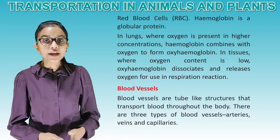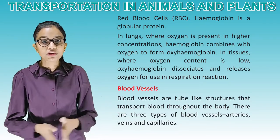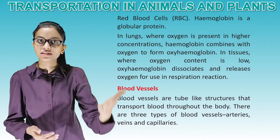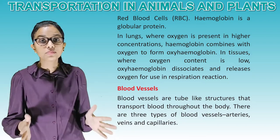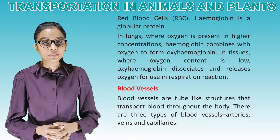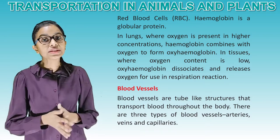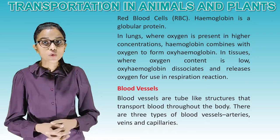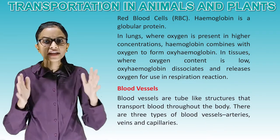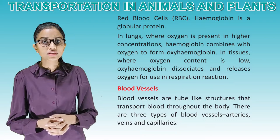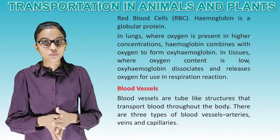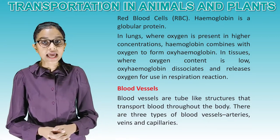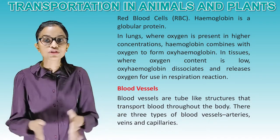Role of blood in oxygen transport: respiration is a process in which oxygen gas in air is inhaled and carbon dioxide is exhaled. Blood transports these gaseous compounds through hemoglobin present in red blood cells. Hemoglobin is a globular protein. In lungs, where oxygen is present in higher concentration, hemoglobin combines with oxygen to form oxyhemoglobin. In tissues, where oxygen content is low, oxyhemoglobin dissociates and releases oxygen for use in respiration.